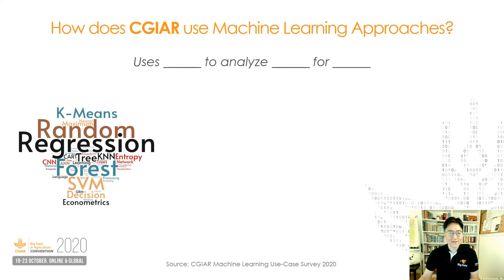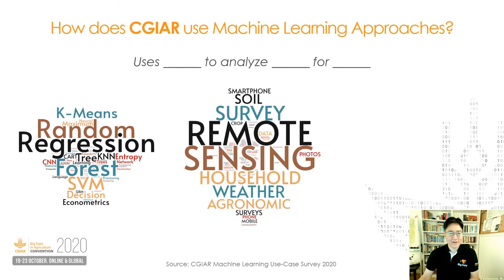Here you can see there are a lot of different analytical methods being used, from random forest, regression, classification, and neural net. Our colleagues said they need to use these methods to analyze large volumes of data from, for example, satellite remote sensing, household surveys, agronomic trials, and soil and weather data.